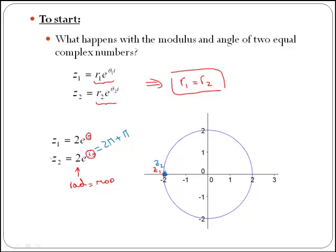Therefore, those two numbers are equal. z1 is equal to z2, and we can clearly see their modulus are equal. Therefore, what can you say about their angle?